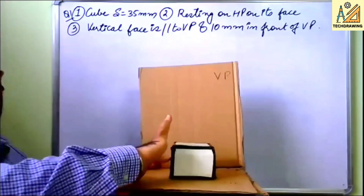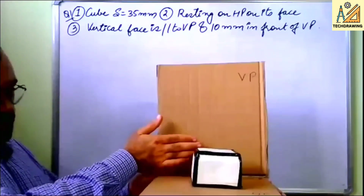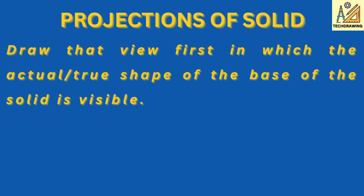The cube is resting on one of its faces on HP such that one of the vertical faces is parallel to VP. The vertical faces are this, this, this, and this. Let us consider this face — it is parallel to VP and 10mm in front of VP. Now there is a golden rule: always draw that view first in which the base of the solid is visible.